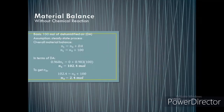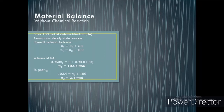Solving manually with a basis of 100 moles of dehumidified air (DA) and assuming steady state process, we apply the overall material balance: N1 = N3 + DA. With DA = 100, our first equation becomes N1 = N3 + 100. For the dry air balance: 0.960·N1 = 0 + 0.983×100, giving N1 = 102.4 moles. Substituting back: 102.4 = N3 + 100, so N3 = 2.4 moles.